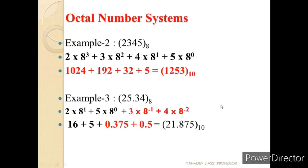Let us understand another example: 2345 base 8. It is represented as 5 × 8⁰, 4 × 8¹, 3 × 8², and 2 × 8³. When we convert: 1024 + 192 + 32 + 5 = 1253 in base 10.